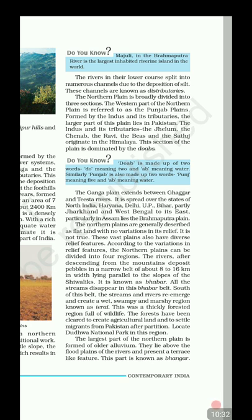The rivers in the lower course split into numerous channels due to deposition of silt, forming riverine islands. The Northern Plain is broadly divided into three sections: the Punjab Plain (between Indus and Ghaggar), the Ganga Plain (between Ghaggar and Tista), and the Brahmaputra Plain (between Tista and Brahmaputra).